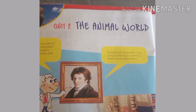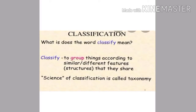Moving towards the very first topic in the second chapter: why classification? Let me first clarify the word classification. Classify means to group things according to similar or different features, that is structures that they share. The science of classification is called Taxonomy. Classification, meaning Darjabandi, is an arrangement and categorizing of things, animals, or plants into groups or systems according to their similarities and dissimilarities, or simply the act or process of classifying things on the basis of their characteristics or features.